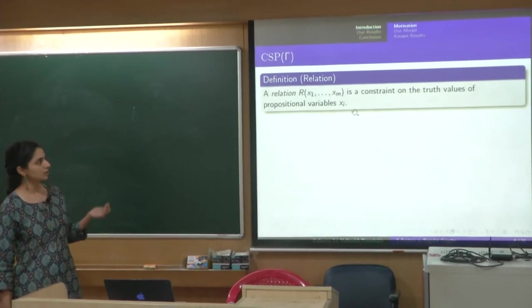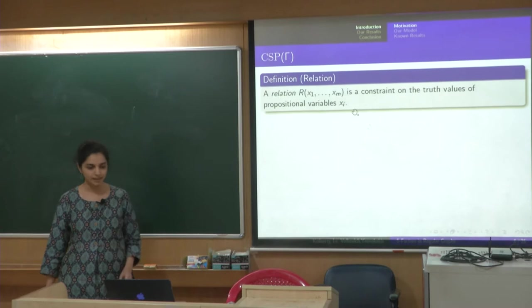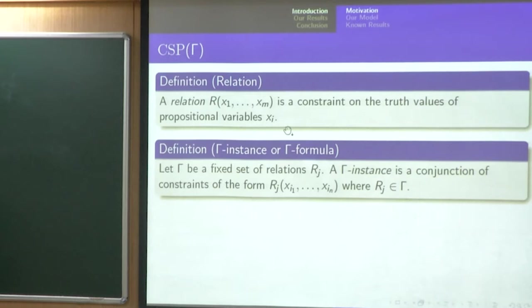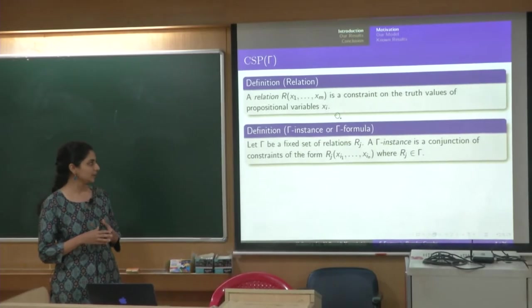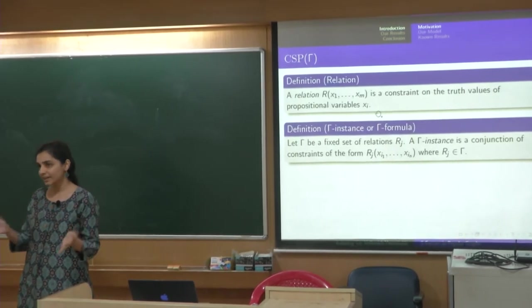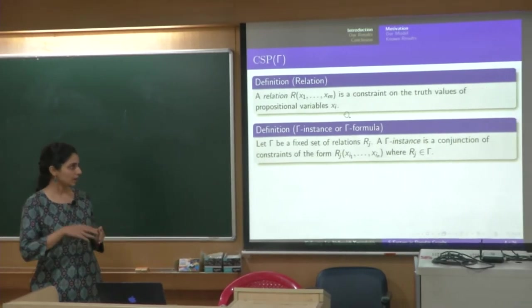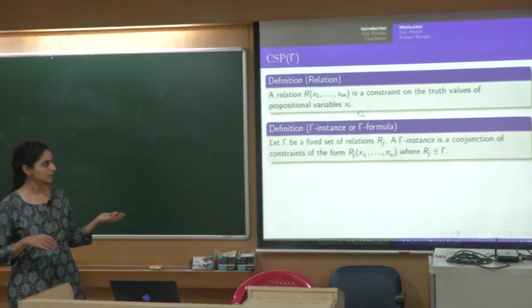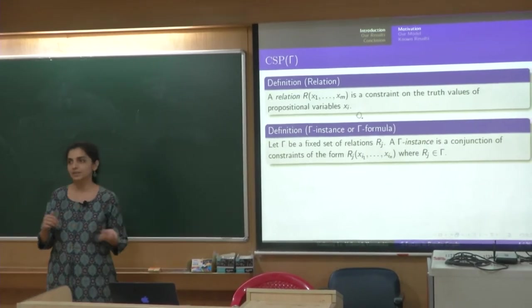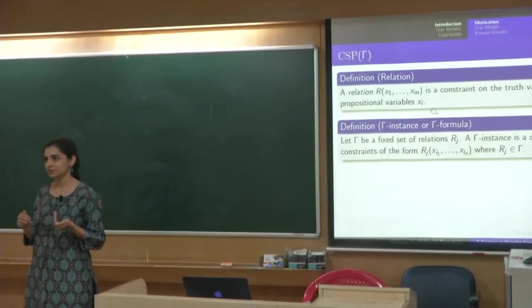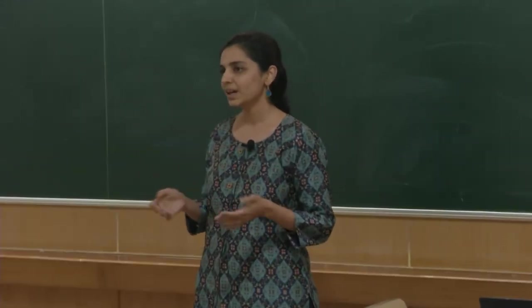So constraint satisfaction problem could scale from problems in P all the way till problems that are in NP and there are versions where maybe it is even harder than NP and so on. So, the constraint satisfaction problem that will be considered in this talk are on Boolean domain and they are stated in a slightly different language, so let me introduce some notation to just talk about the problem a little more carefully. A relation R is a constraint on the truth values of propositional variables Xi.